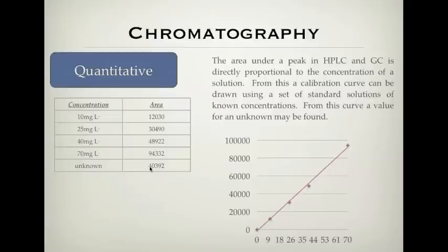I have an area of 40,392, so I work out whereabouts that is. It's about here. I then go down to what my concentration is at this area, which happens to be around about 34 milligrams per liter. That's how I can use a calibration curve to determine my unknown, and how I can get quantitative analysis from a chromatogram.